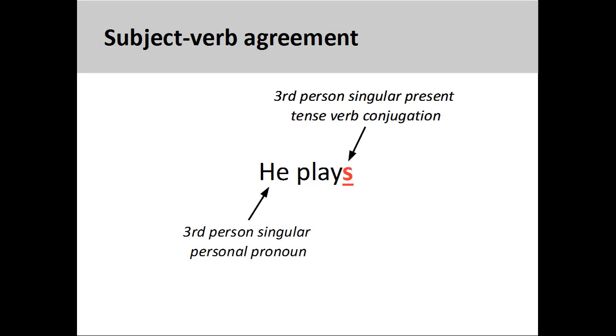English adds an 'S' to the verb in order to make a third person singular verb conjugation. This agreement between the subject and the verb makes the sentence sound much better.